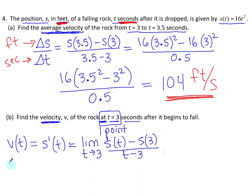We apply this to our problem. The limit as t approaches 3, s of t is our function, 16t squared, minus s of 3, which means we're plugging 3 into our function, 16 times 3 squared, over t minus 3.